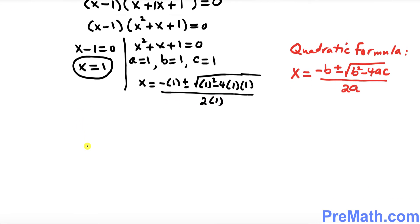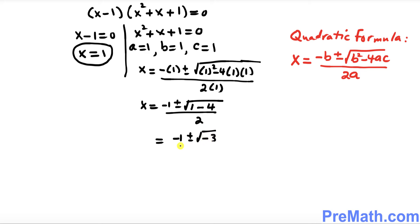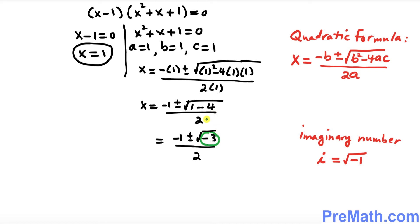Let's go ahead and simplify. So x equals negative 1 plus or minus the square root of 1 minus 4, divided by 2, which gives negative 1 plus or minus the square root of negative 3, divided by 2. One important thing to keep in mind: whenever you have a negative sign inside the square root, you have to be very careful — this is going to give us an imaginary number i, where i always equals the square root of negative 1.